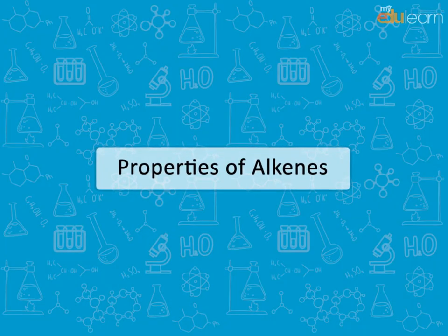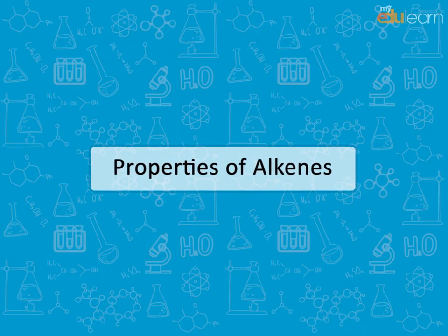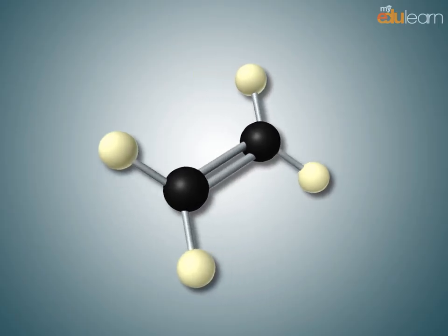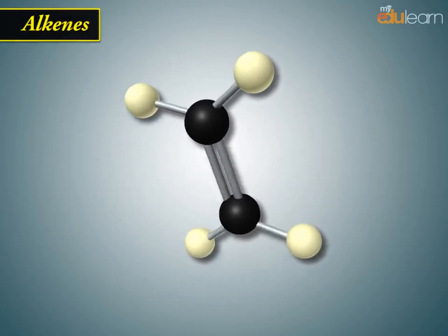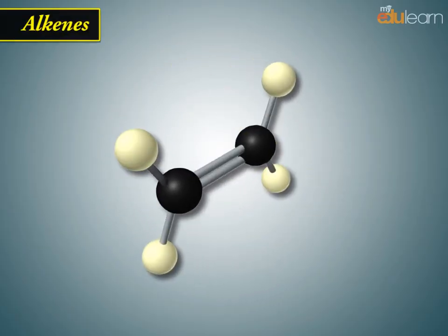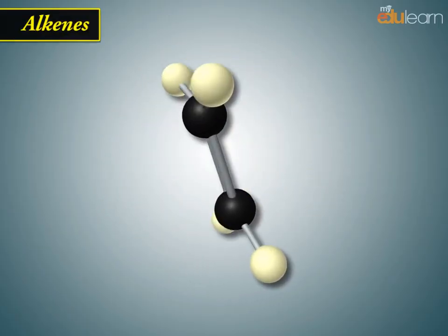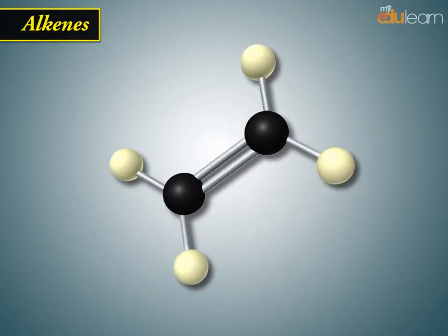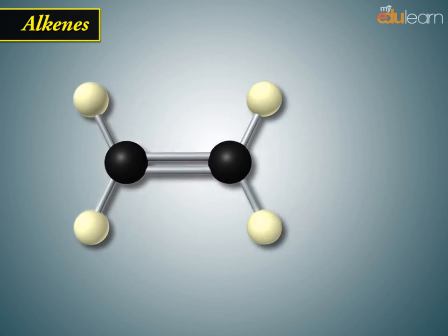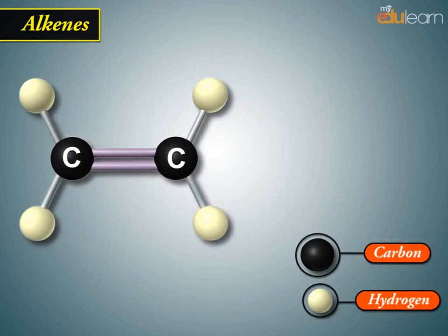Properties of Alkenes. Alkenes contain a carbon-carbon double bond. This carbon-carbon double bond changes the physical properties of alkenes.